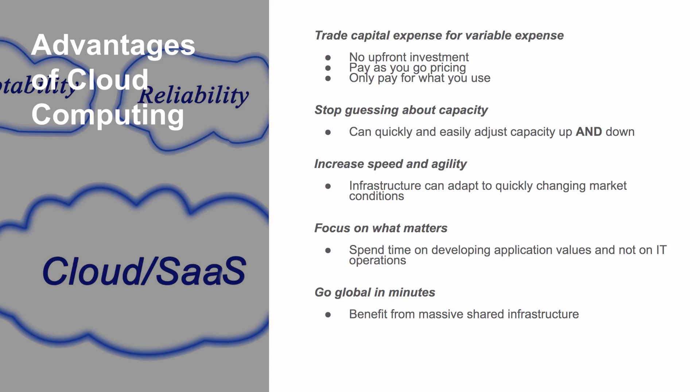The first area we'll look at is you'll trade capital expense for variable expense. In a traditional model you would have a significant upfront investment in equipment, servers, racks, and data centers. In the cloud you don't have any upfront expense — you simply pay as you go and pay for what you use, so it's a very efficient model.